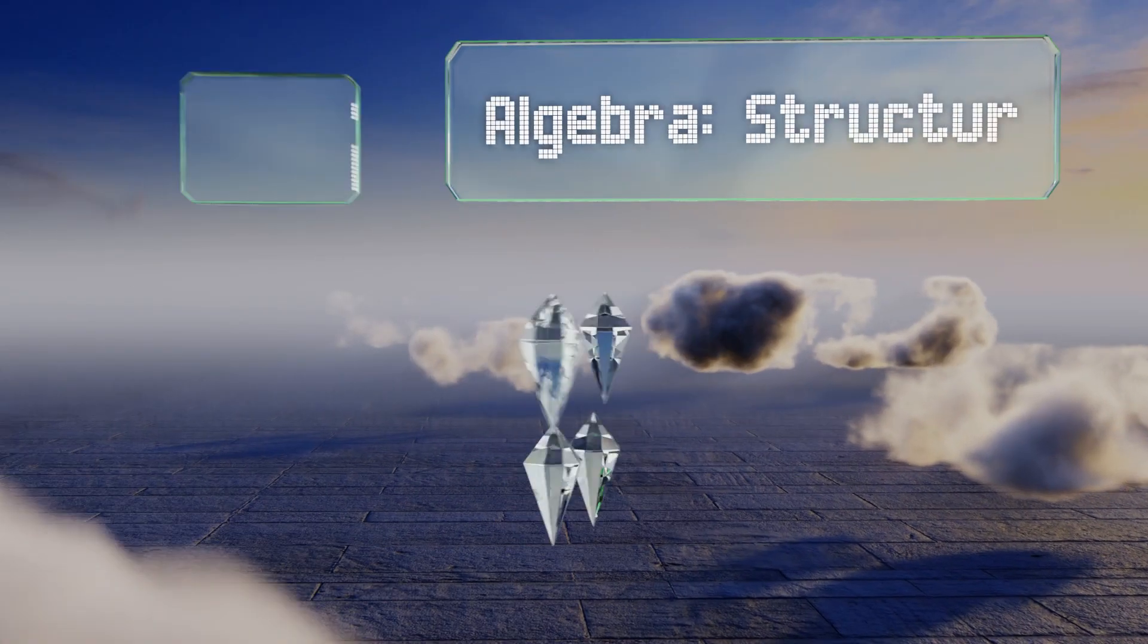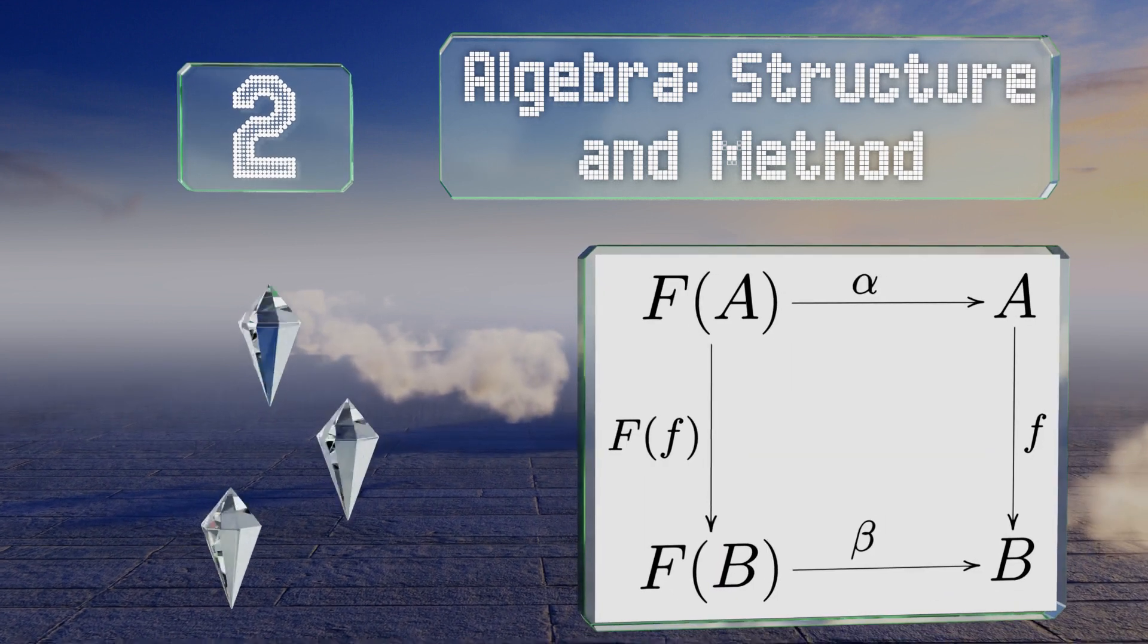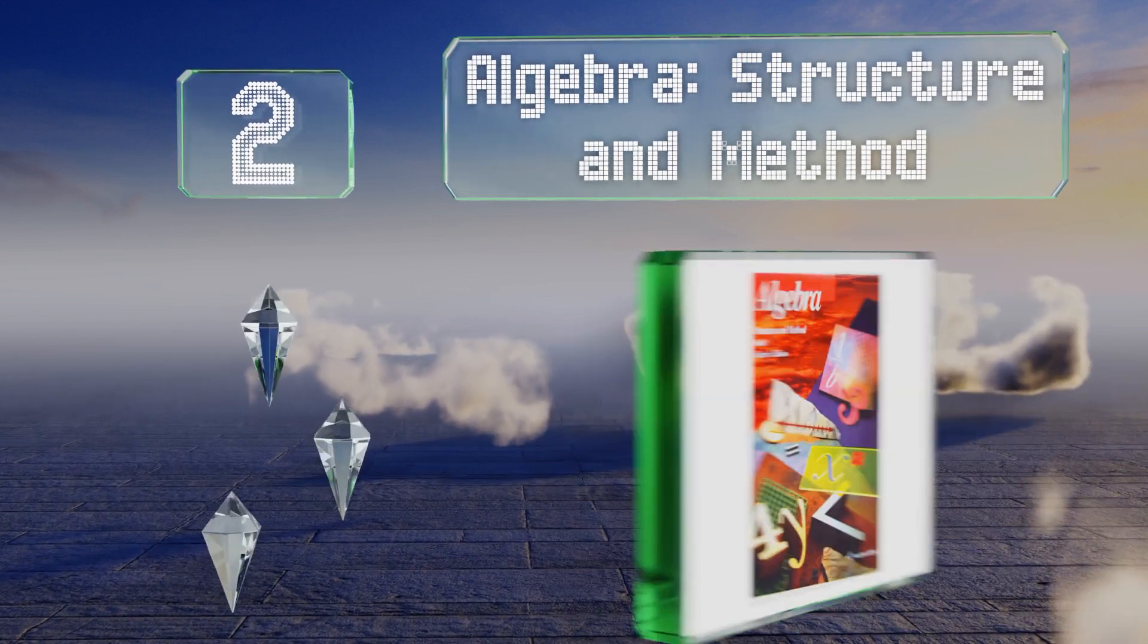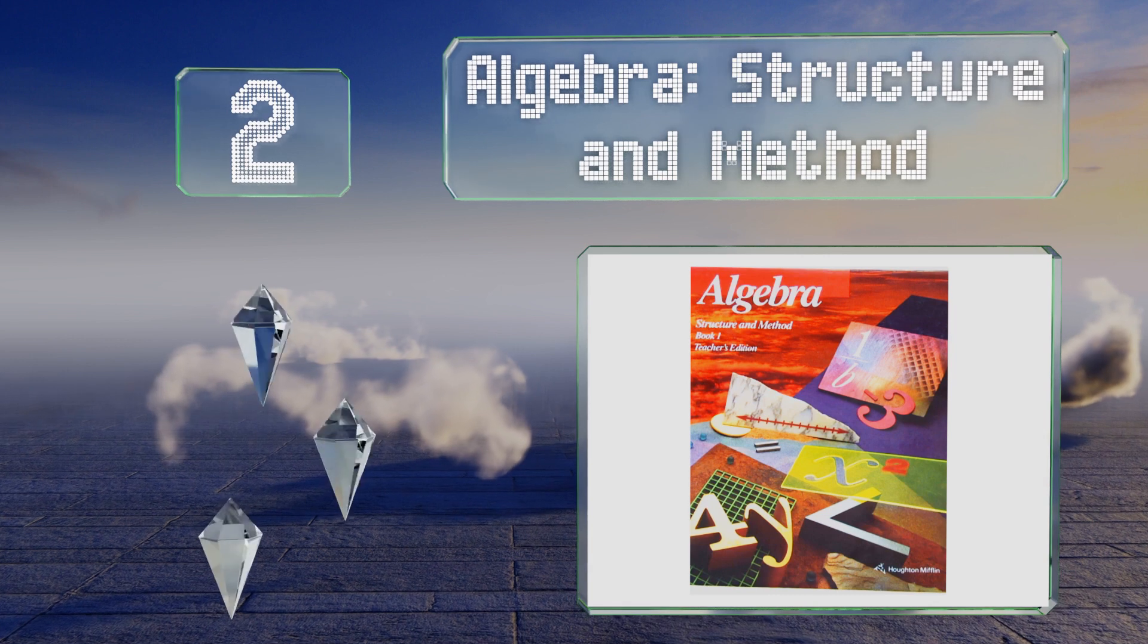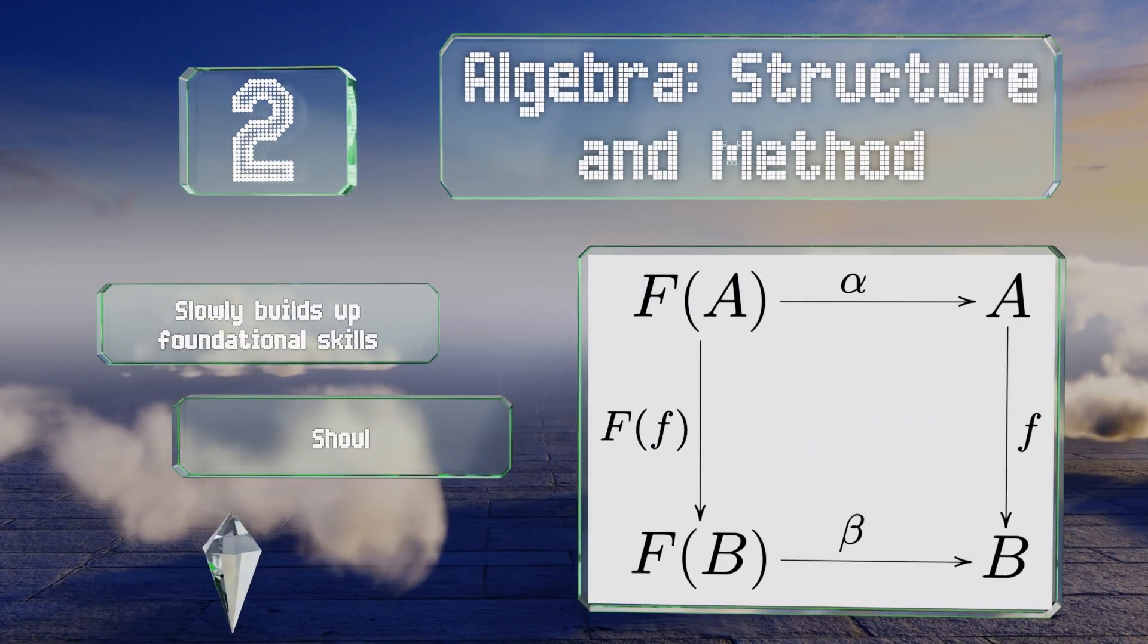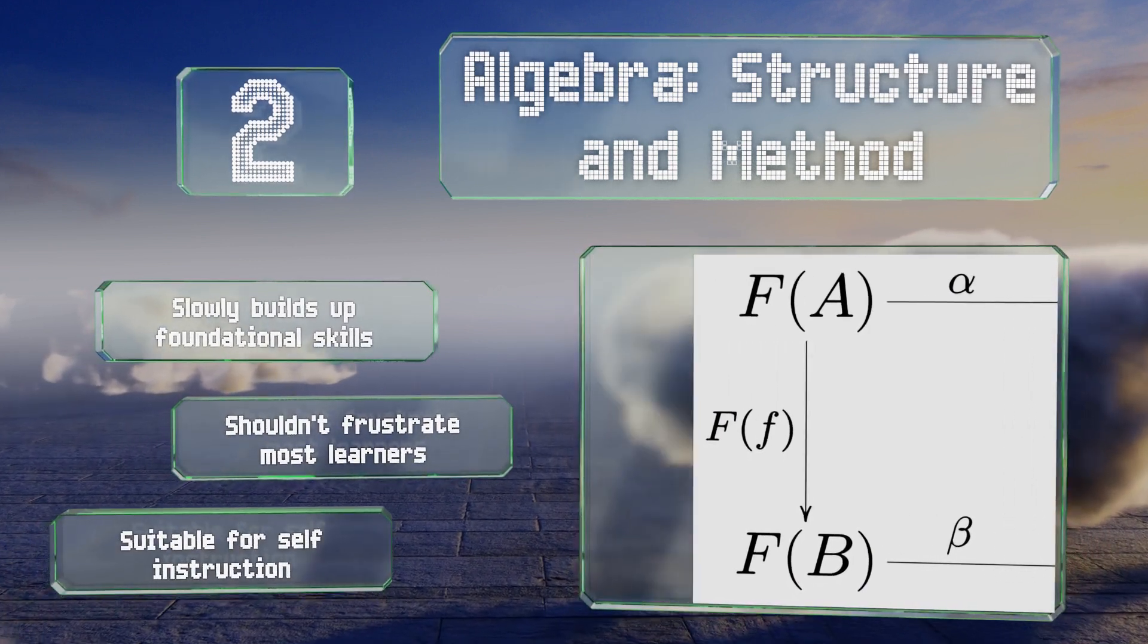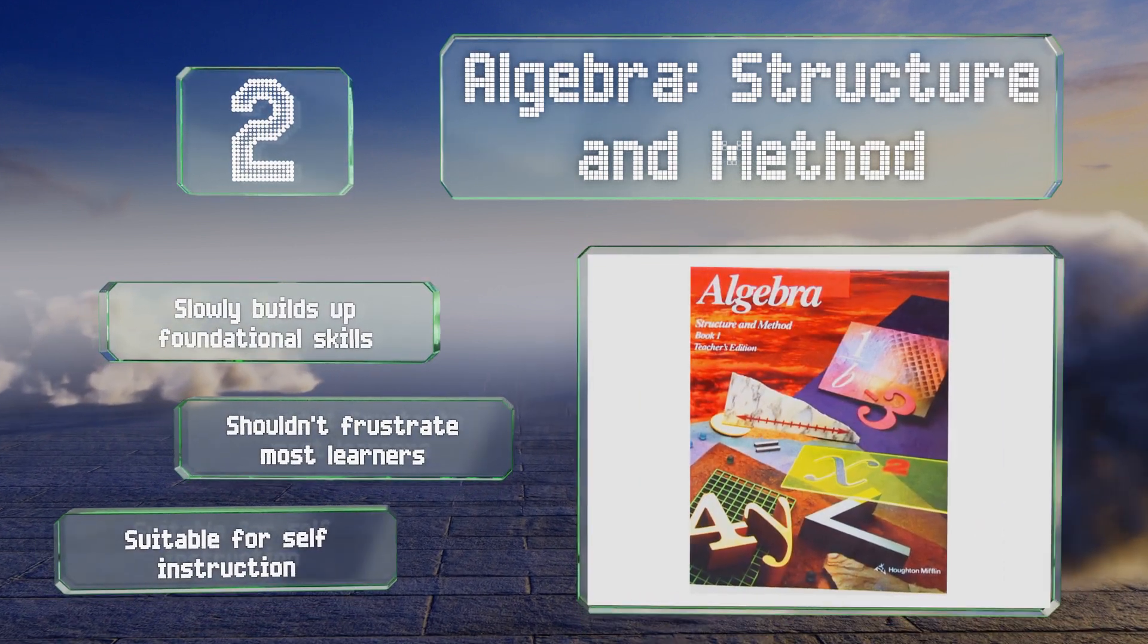At number two, Algebra Structure and Method may not have as many pictures or fancy items as some other options, but it might offer the best sequencing. The problems get harder incrementally as students work through it so they don't feel overwhelmed. It slowly builds up foundational skills and shouldn't frustrate most learners. This one's suitable for self-instruction.